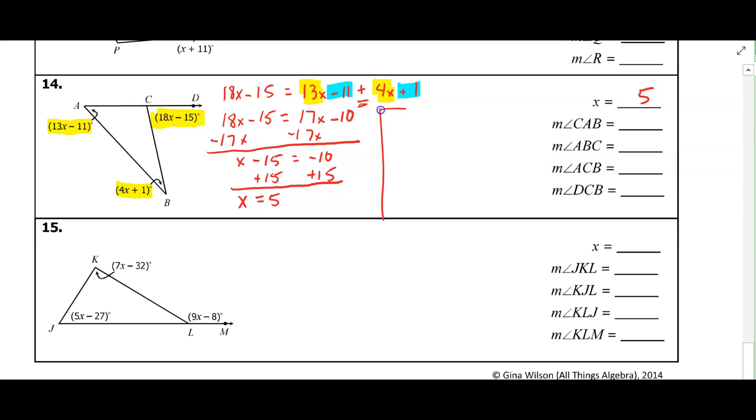And now we can go ahead and start substituting this in to find everything else. So CAB, that's going to be this angle here. So angle CAB is going to be 13 times 5 minus 11. We'll just go ahead and put that answer on the line. And that should be 54 degrees.